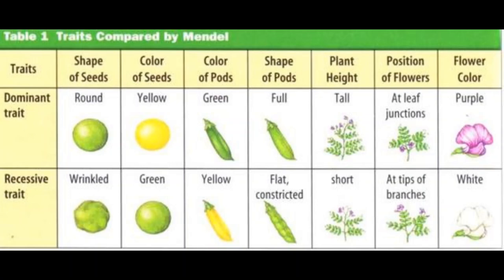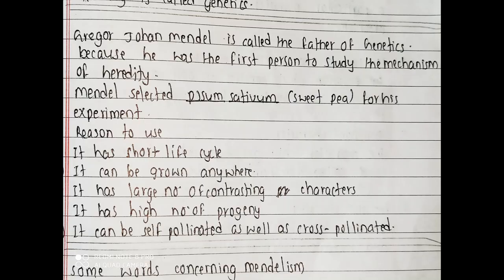You can see on the screen there are 7 characters. Mendel used his experiment with Pisum sativum, or the sweet pea plant, and there are 7 characters shown on the screen. An important question is: why did Mendel select the pea plant for his experiment? Why did Mendel use Pisum sativum?